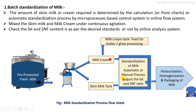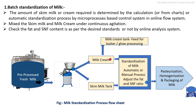In the standardization process, as per the required quantity of SNF and fat in the final product, we calculate the amount of milk cream to mix into the skim milk. This results in the specific standardized milk containing 4.5% fat and 8.5% SNF, calculated either by manual method or by automatic adjustment in the production line.